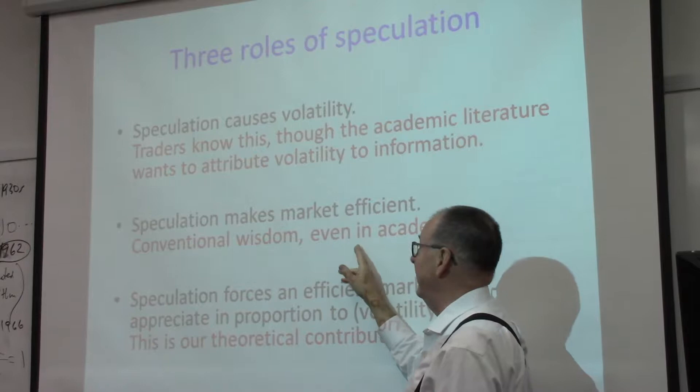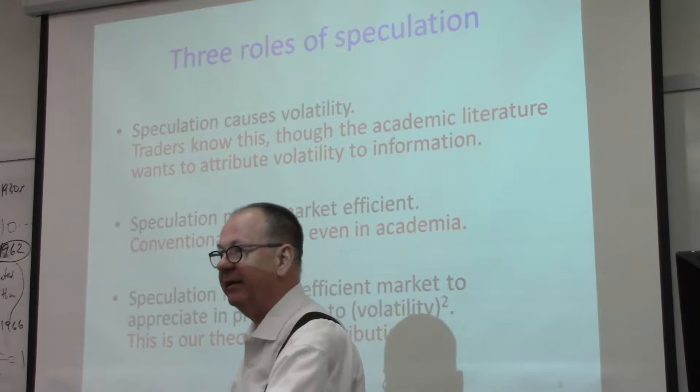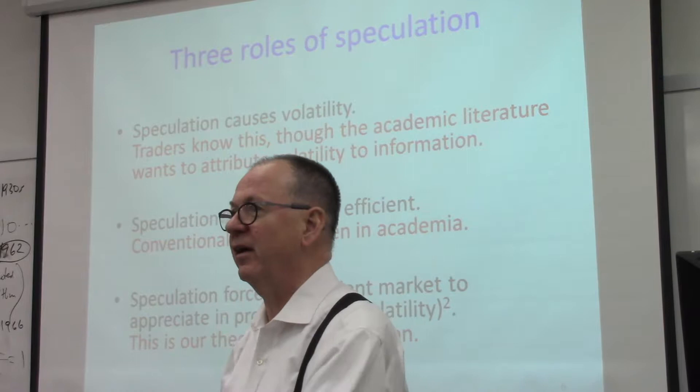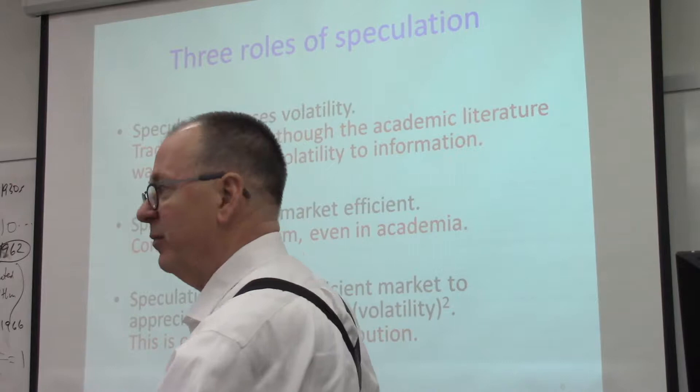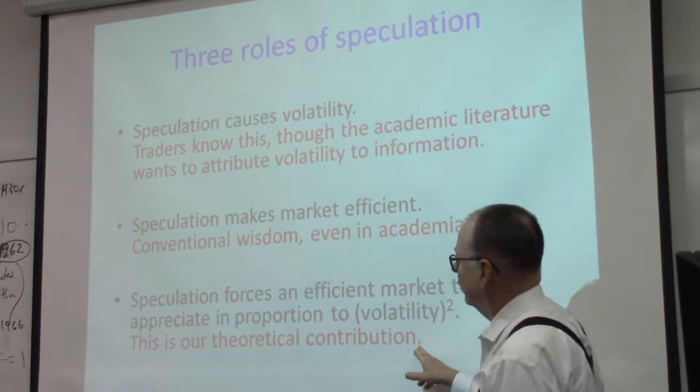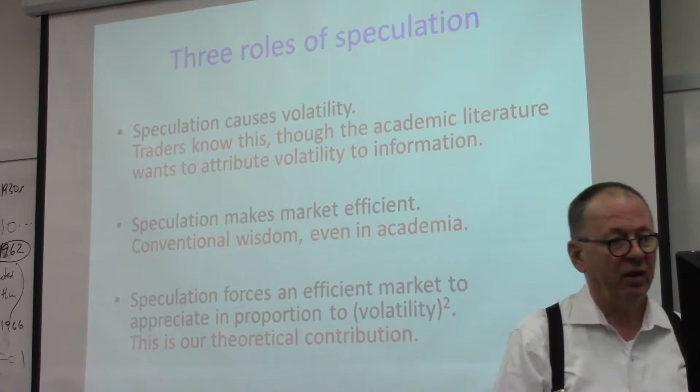There's a conventional wisdom, even in academia, that speculation is what makes the market efficient because it exhausts the possibilities of making money. If there are enough people running enough algorithms, anything you could think of — you go out and run one of those algorithms, you're not going to make any money because it's already been priced out of the market. Our theoretical contribution is this third point: the speculation forces the market to appreciate in proportion to its volatility squared.